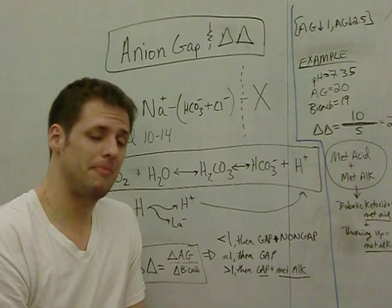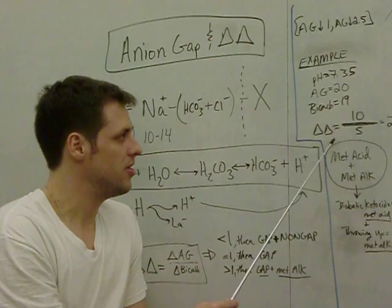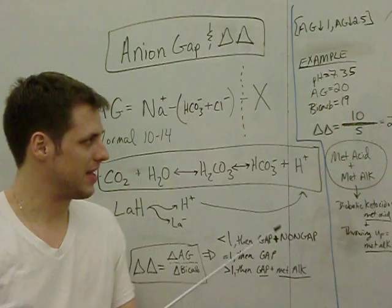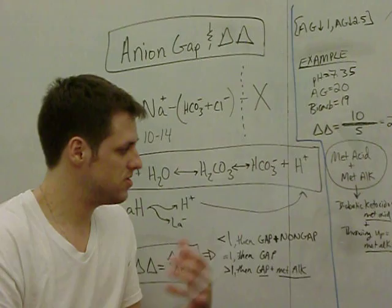Then the delta bicarb, if normal bicarb is 24, the delta bicarb is 5, so we have a bicarb of 19. Your delta delta is now 2, and that tells me, remember, greater than 1, that I have a gap acidosis and a metabolic alkalosis.